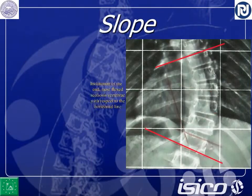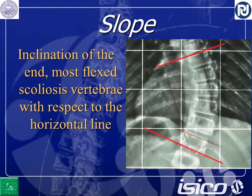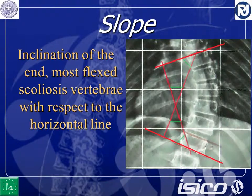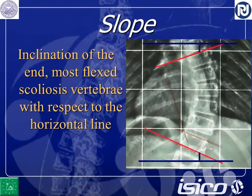So we introduce here the concept of slope. Slope is the inclination of the most flexed end vertebra with respect to the horizontal line. It is not the Cobb degree — it is the inclination. The sum of the two inclinations gives the Cobb degree. It's exactly the same thing, but we introduce the information coming from the horizontal line.